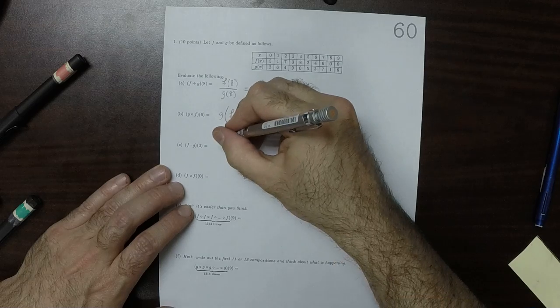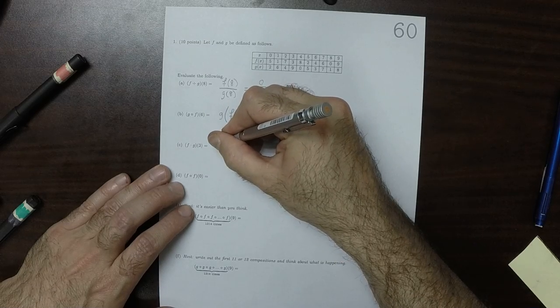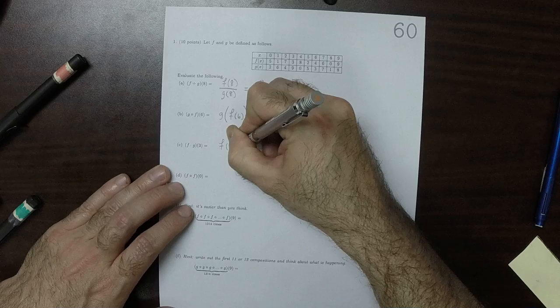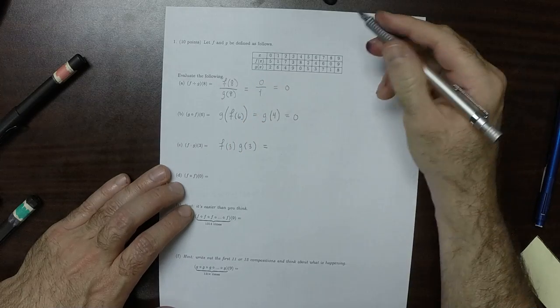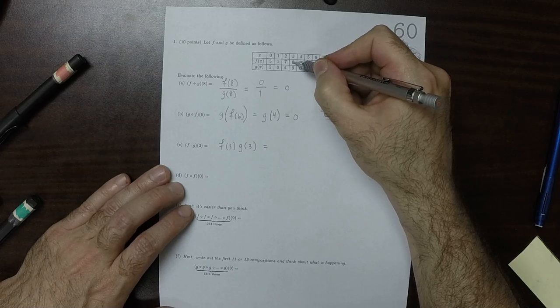This one is by definition f evaluated at 3 product g evaluated at 3. That can be accomplished with two lookups, so that'd be 3 times 9, which is 27.